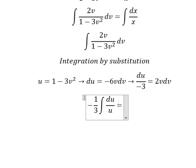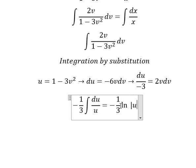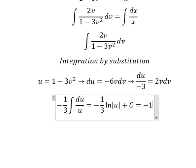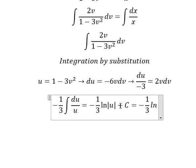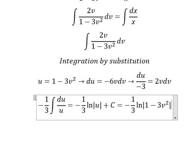The integral of this one gives us negative 1/3 ln of the absolute value of u plus c. u is 1 minus 3v squared.